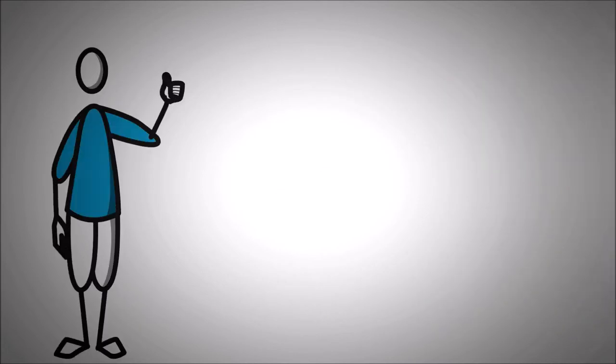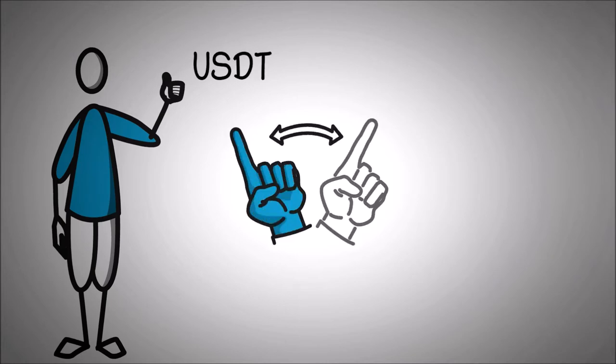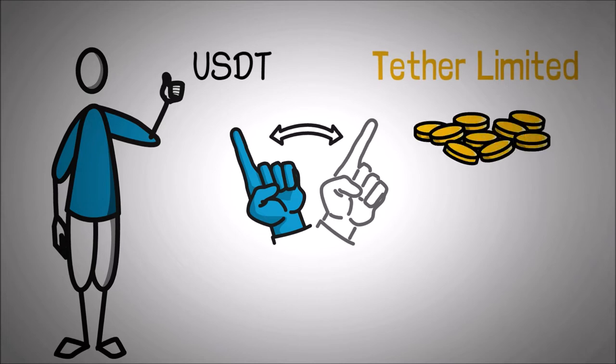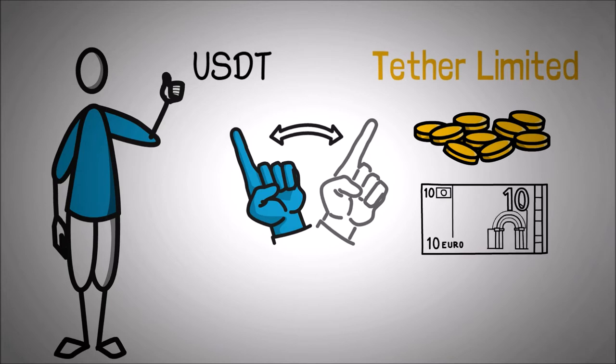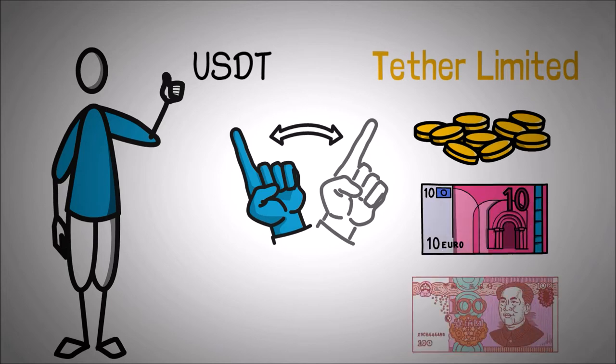Alright, now that you know about USDT, let me tell you that it's not the only stablecoin issued by Tether Limited. Other than the usual USDT, Tether also issues tokens backed by other currencies and commodities like euros, offshore Chinese yuan, and gold.